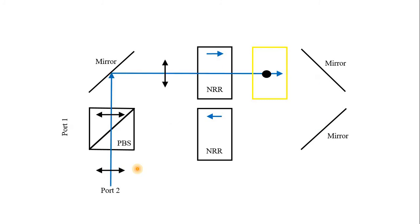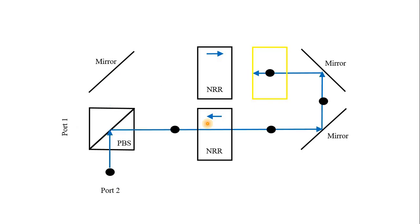Now let's see the light coming back, starting from port 2 with vertical polarization. It passes here, reflects from the mirror, then transfers to the other polarization — but now the polarizer blocks it. The light doesn't go to port 1, so it is isolated. For the other polarization: put it from port 2, it comes to the beam splitter and is reflected in this direction. Nothing happens because it's against the blue arrow. It comes here, reflects from the mirror, and is absorbed by the polarizer. No light goes back to port 1. So this is an optical isolator.